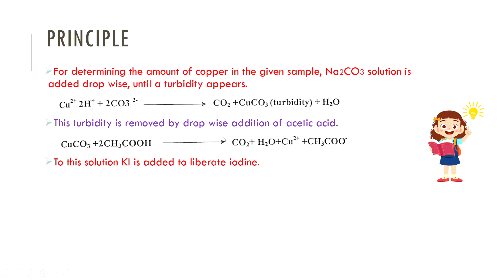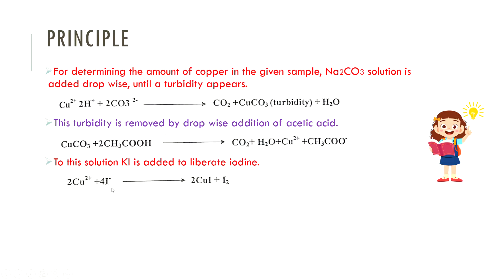In the next stage, potassium and acetic acid are added. We use acetic acid to remove the turbidity. The pH is maintained around 4 to 5.5 using acetic acid as a weak acid, which buffers the solution at the appropriate acidity for the subsequent iodometric titration.